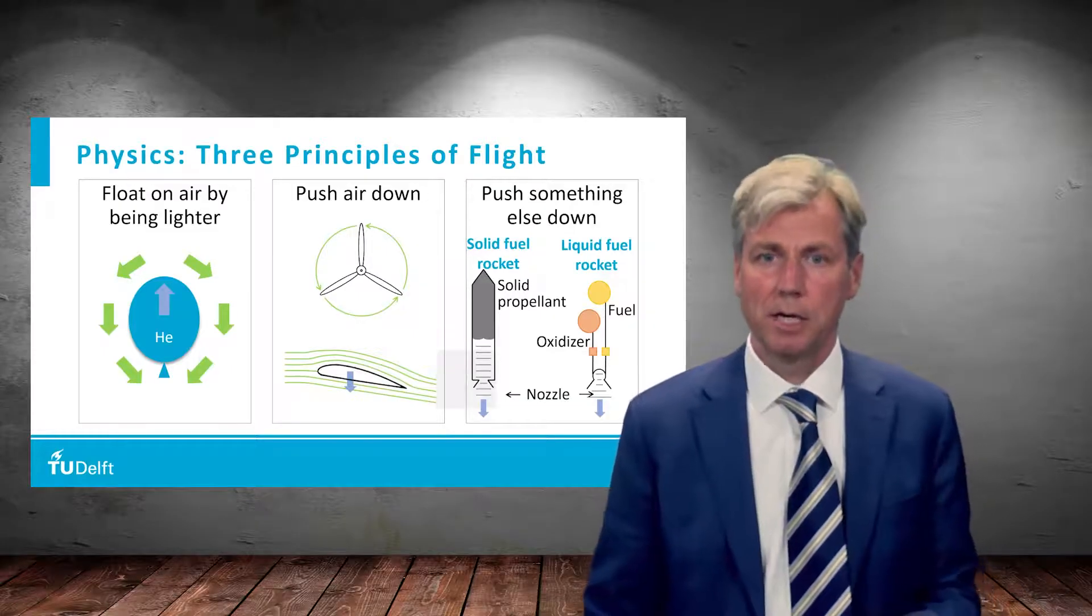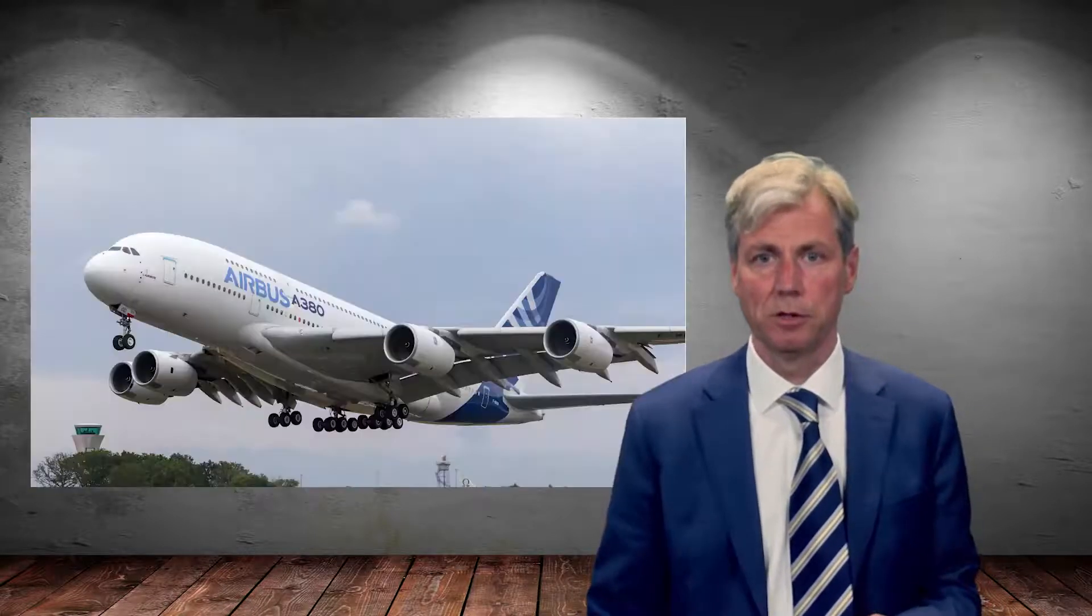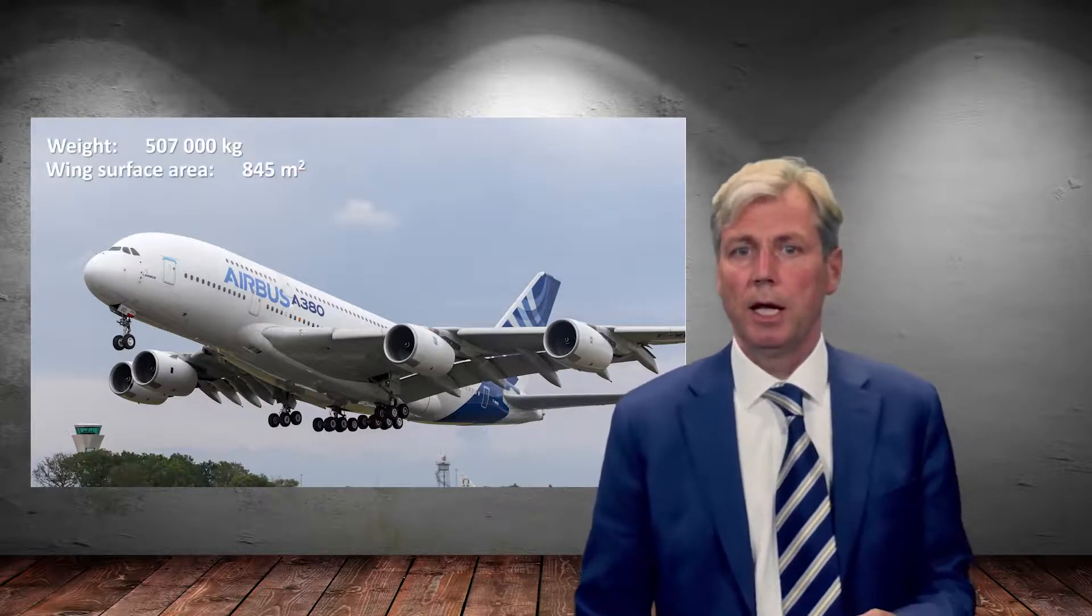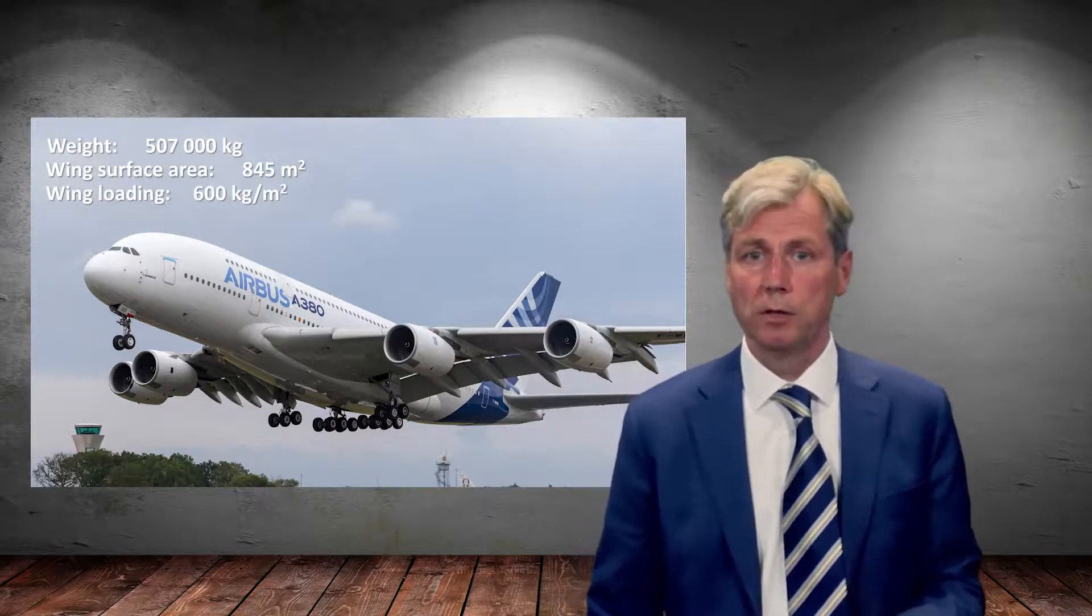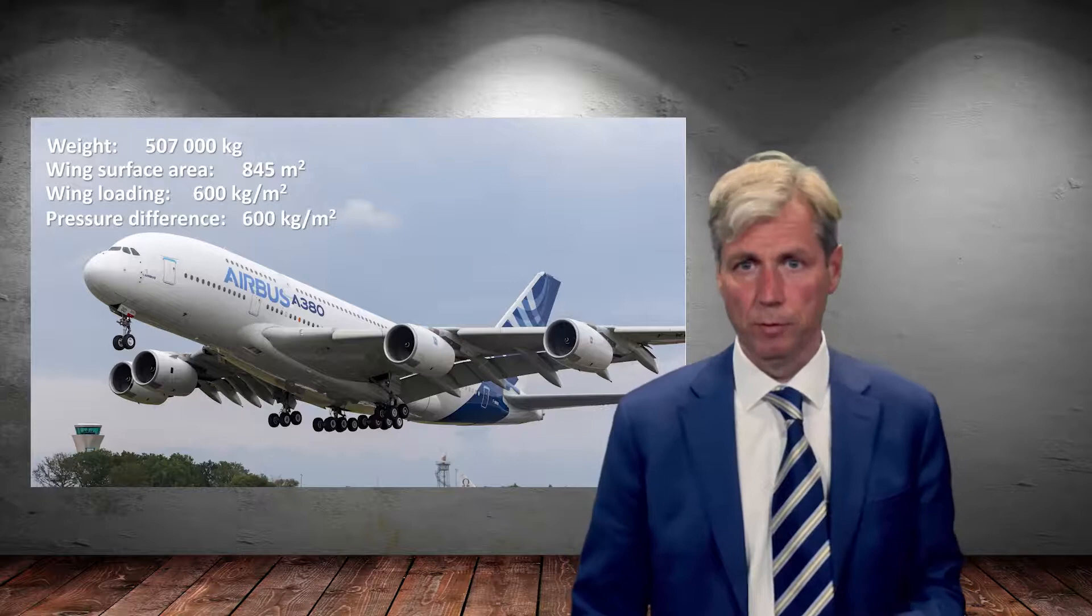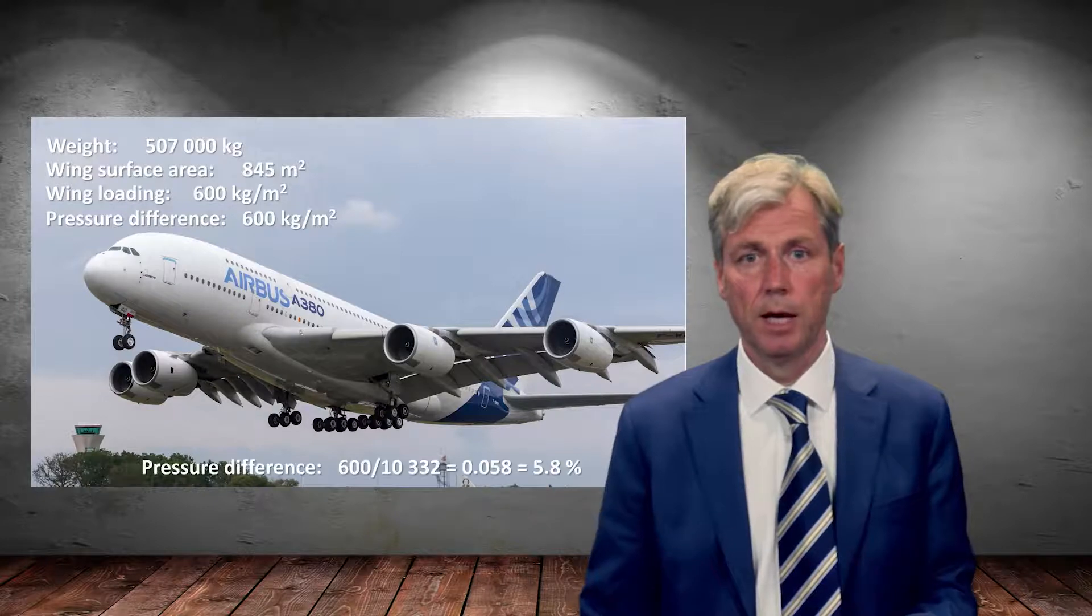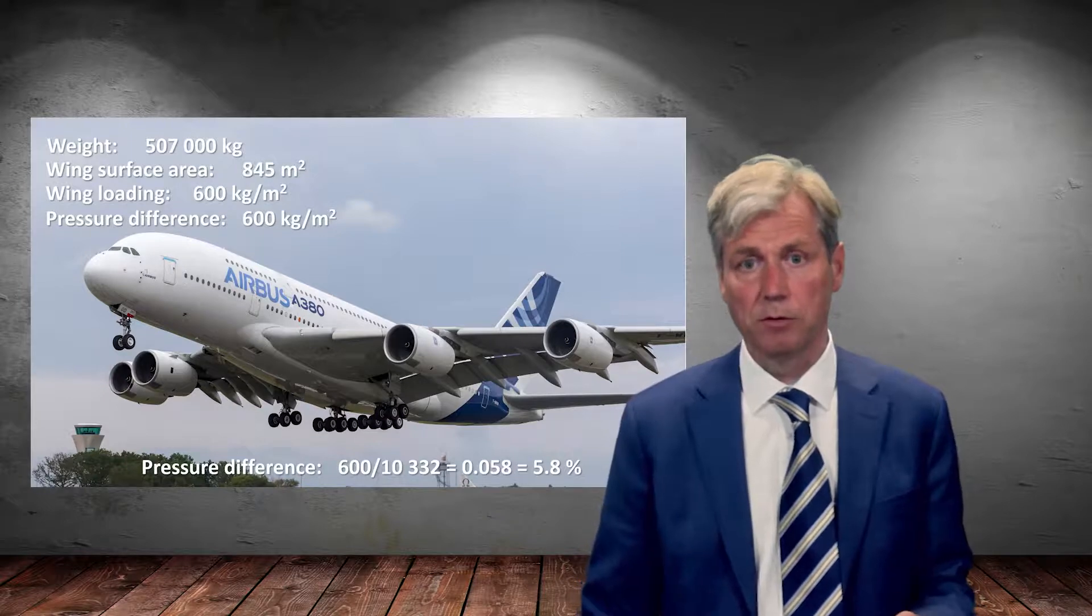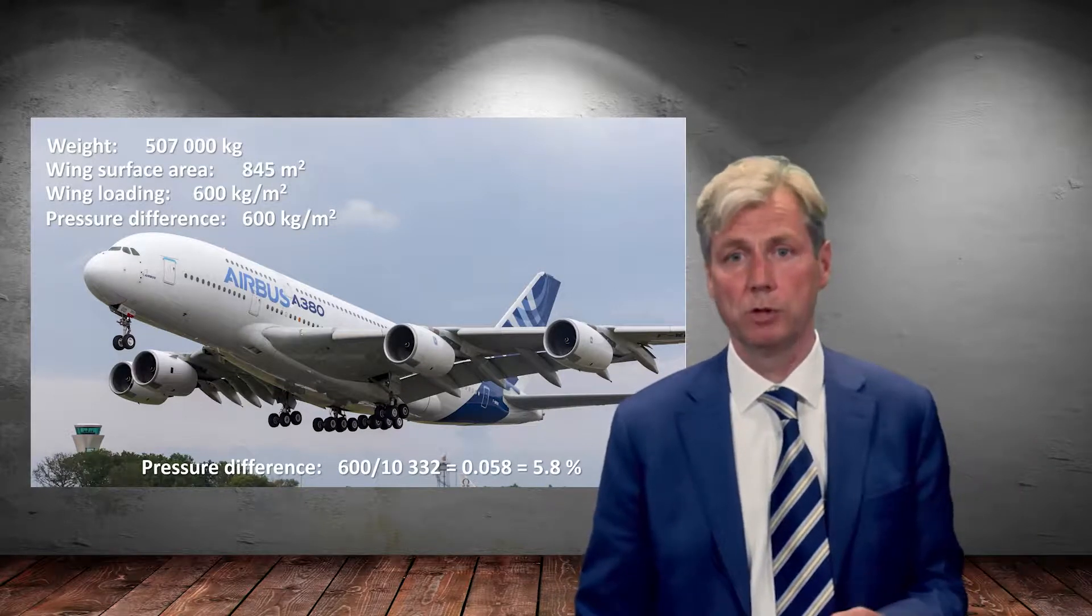And this is what hints at the second principle, pushing air downwards, because it's also about pressure differences. If we look at this airplane, the A380, and we look at the weight, and we look at the wing surface area, then we can calculate per square meter what the wing carries, the wing loading. If we then look at the pressure difference that would be required between the top and bottom side of the wing to carry this weight, you could see that this is also 600 kilogram per square meter, the wing loading. And then we can see what actually the total pressure is, 10,000 over 10,000. You could see this is almost 6% of pressure difference between the top side of the wing and the lower side of the wing, and this is what generates the lift.